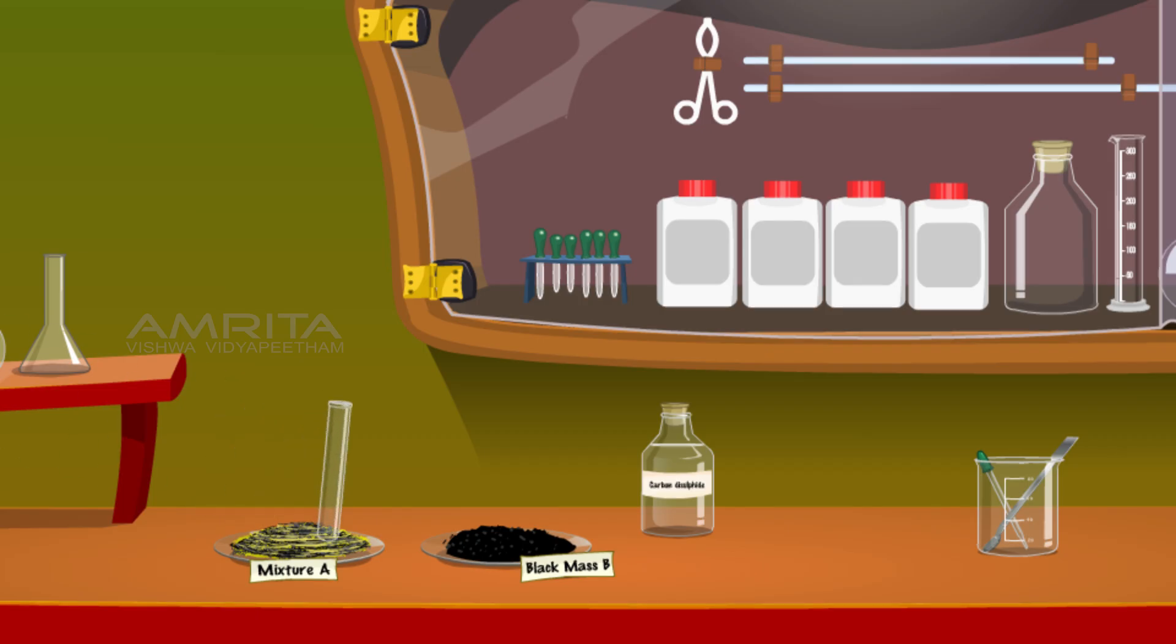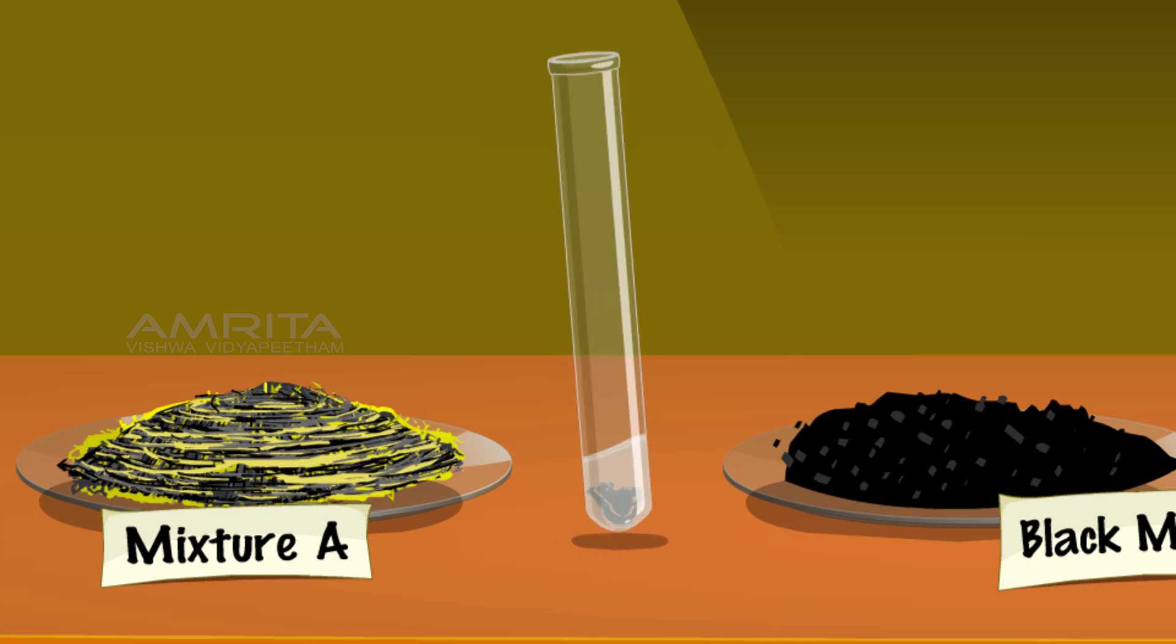Take another test tube and put a pinch of black mass B into it. Then add a few drops of carbon disulphide into the test tube. Shake it well. No changes observed.